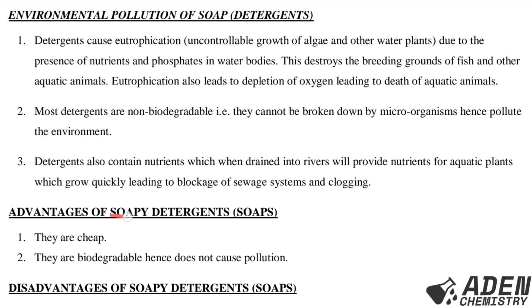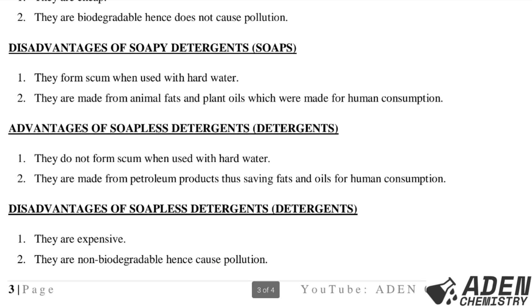Advantages of soapy detergents (soaps): they are cheap, and they are biodegradable, hence do not cause pollution. Disadvantages of soapy detergents: they form scum when used with hard water, and they are made from animal fats and plant oils which were intended for human consumption.